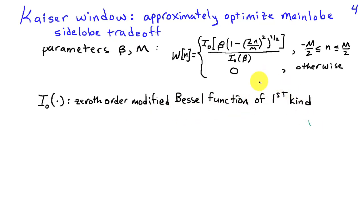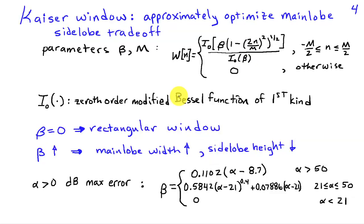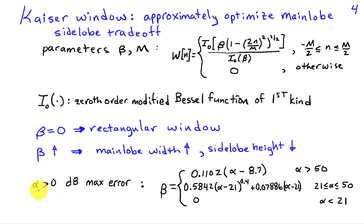This can be computed relatively easily with software such as MATLAB, with beta and the order entering into the definition. As beta changes, we get different windows: when beta equals zero we obtain a rectangular window; as beta increases, the main lobe width increases and the side lobe height decreases. There are empirical formulas for choosing beta given a desired maximum error alpha in dB—for example, if we need side lobes at minus 40 dB, then alpha equals 40. Depending on whether alpha is greater than 50, between 21 and 50, or less than 21, we get different formulas for beta. Similarly, we can choose the filter order using another empirical formula where delta omega is the transition bandwidth.